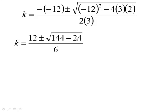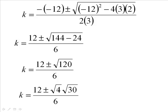Now 144 minus 24 is 120. And 120 is 4 times 30. I say 4 because I know what the square root of 4 is. So it's 12 ± 2√30 / 6.